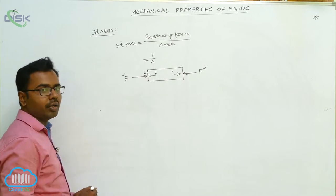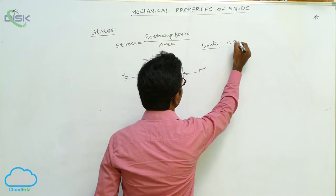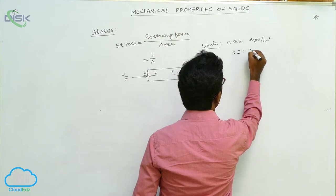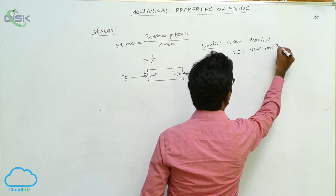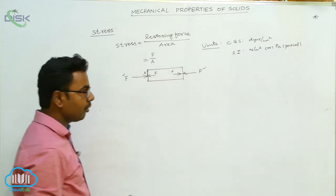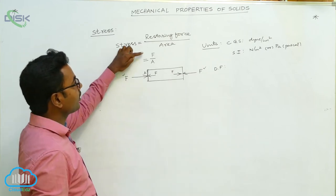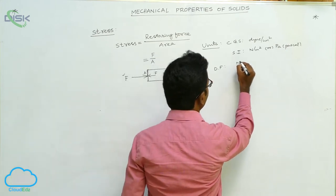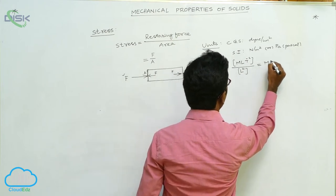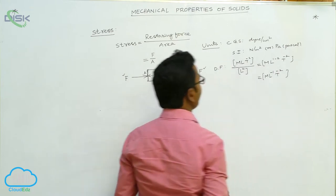Stress = F / A, where F is the force and A is the area. Stress is a scalar quantity. The CGS unit of stress is dyne per centimeter squared, and the SI unit is newton per meter squared, or pascal. The dimensional formula of stress: substituting force as [MLT⁻²] divided by area [L²], we get [ML⁻¹T⁻²]. This is the dimensional formula for stress.